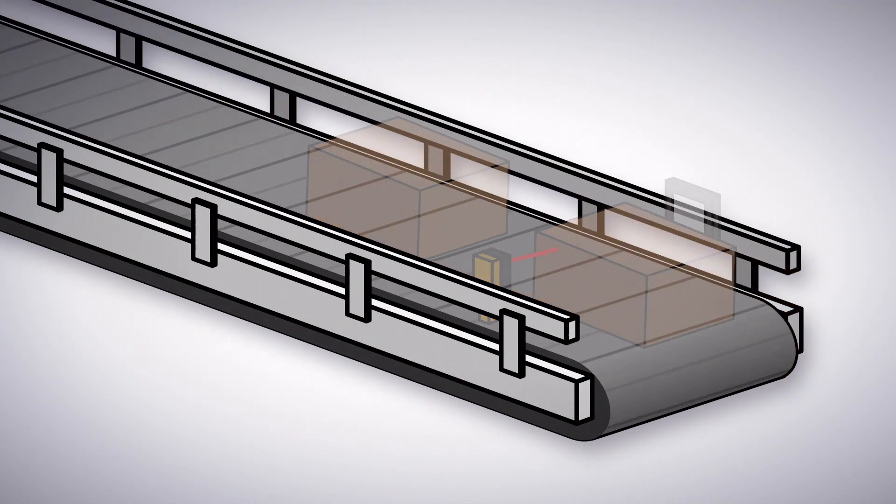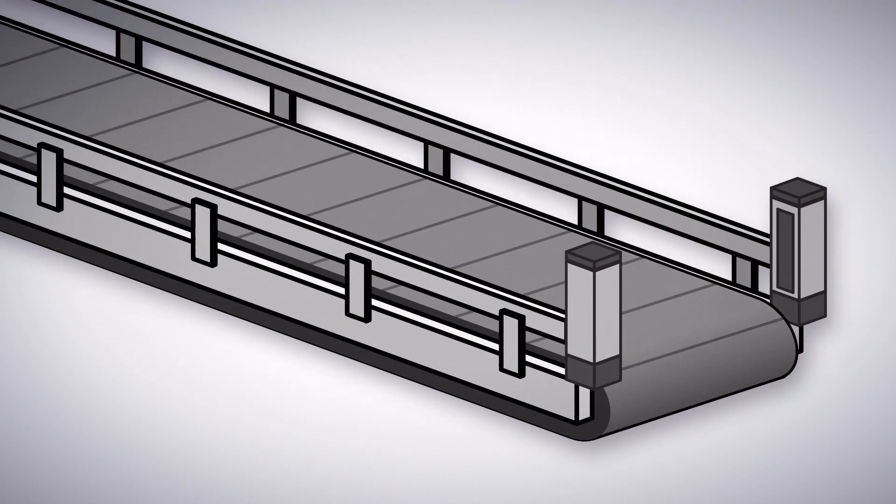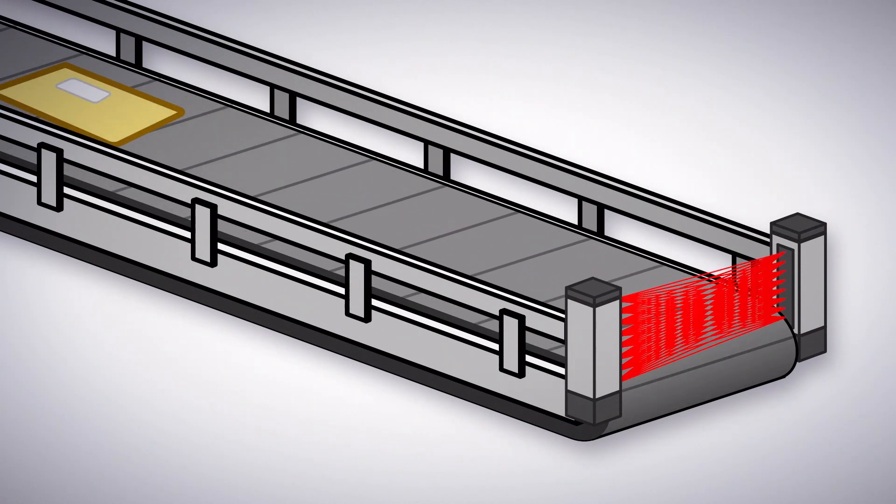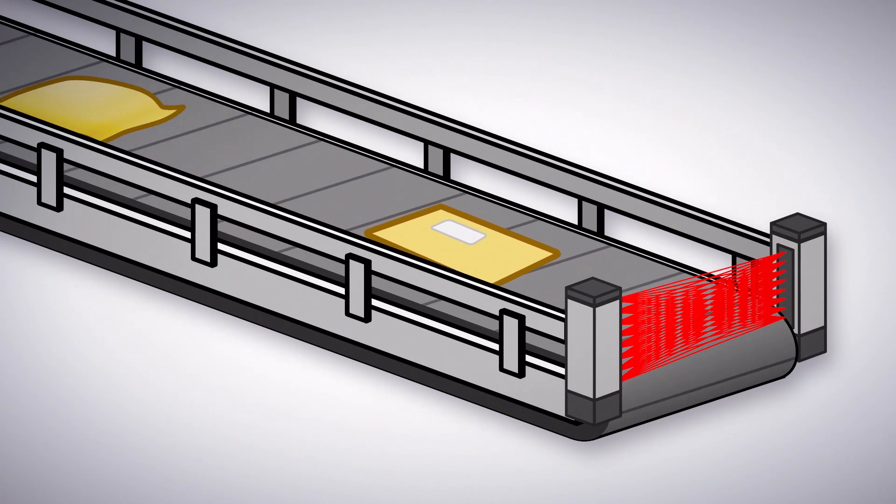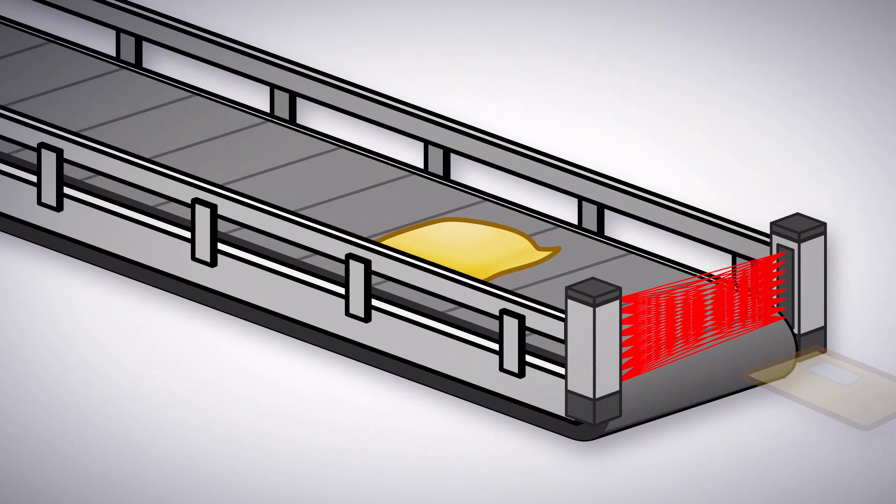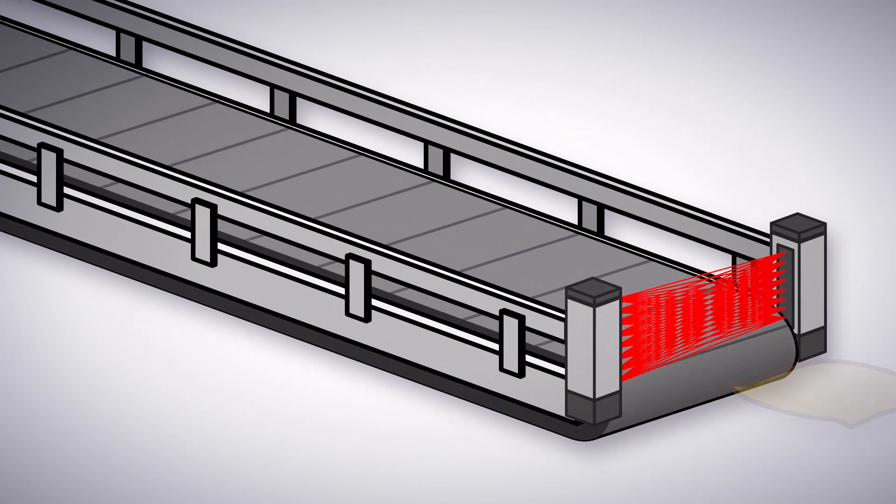For a larger detection area with fast response, the LX sensor is the best choice. The large detection area works best for very thin objects or items with inconsistent sizes, such as padded envelopes.